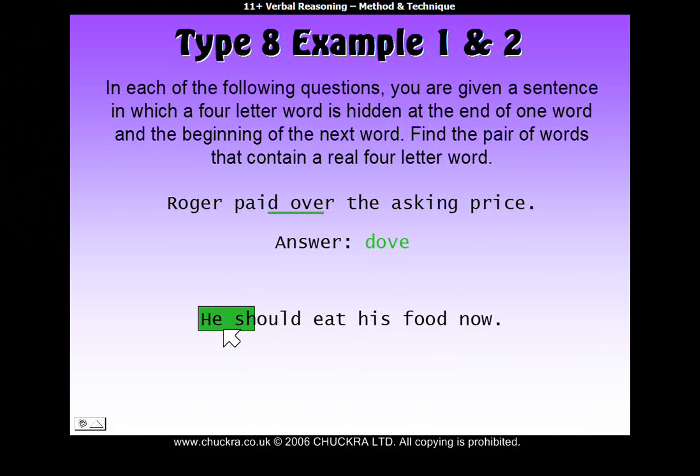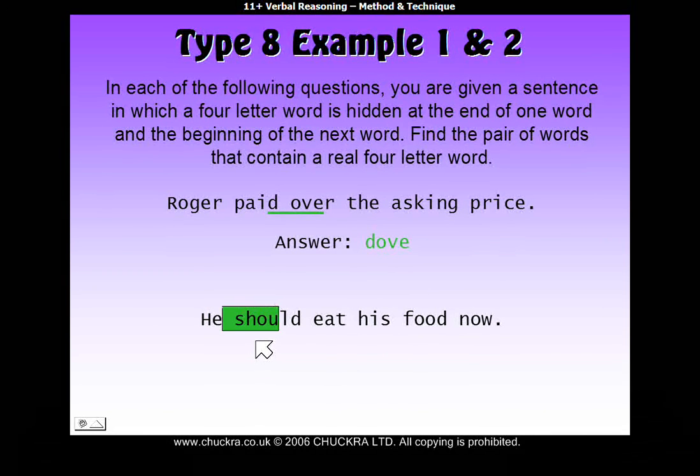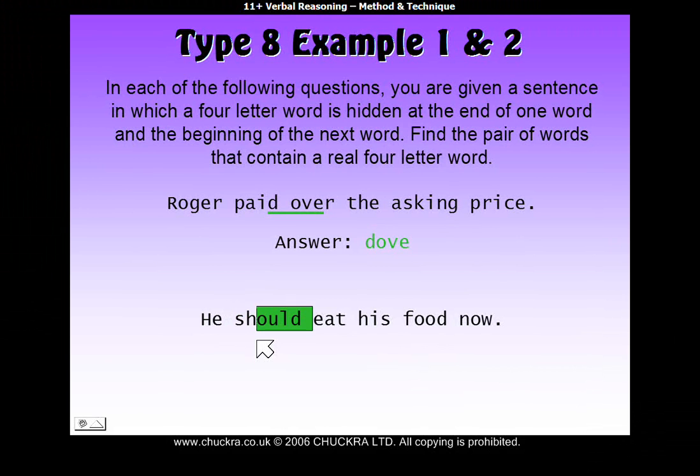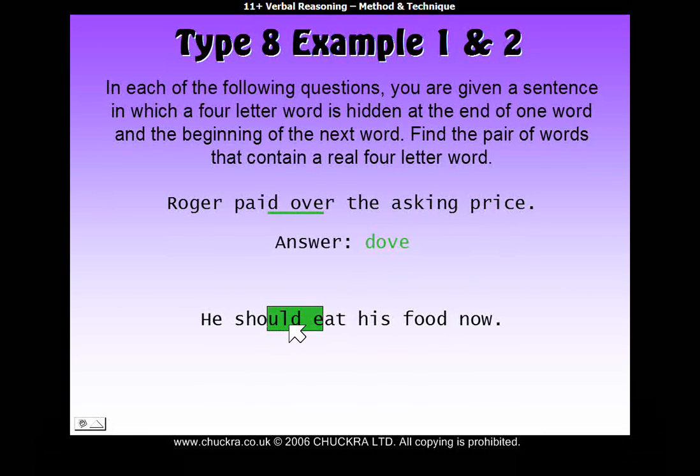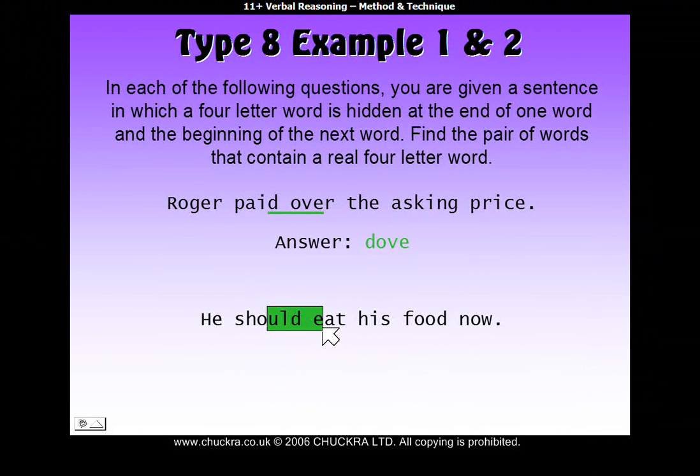And here we go. We've got he and should, which if you read as one word would be 'hesh', which is not a real word. Then you move on all the way till you have three letters from should and one from eat, which makes 'ulde' or 'uld', not a real word. And you keep going: 'ulde', 'deet', again, none of those making real words. So you move on.